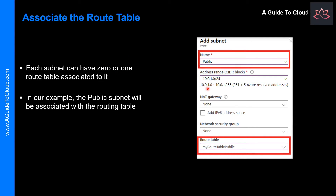The last step in our example is to associate the public subnet with the new routing table. Each subnet can have zero or one route table associated with it. In this example, remember that the virtual appliance should not have a public IP address and IP forwarding should be enabled on the device.